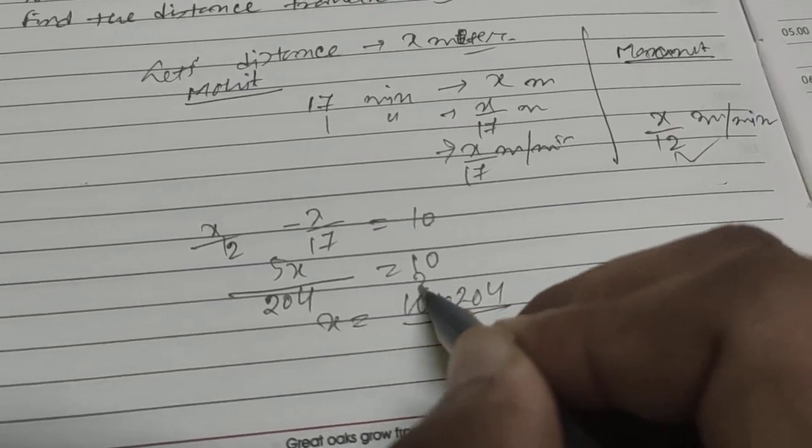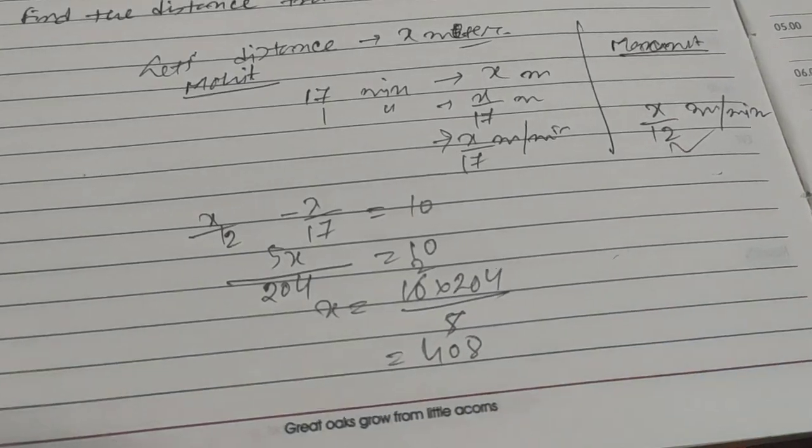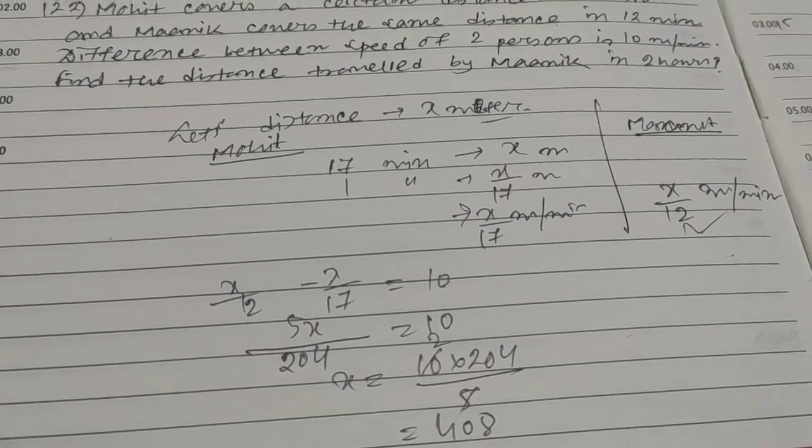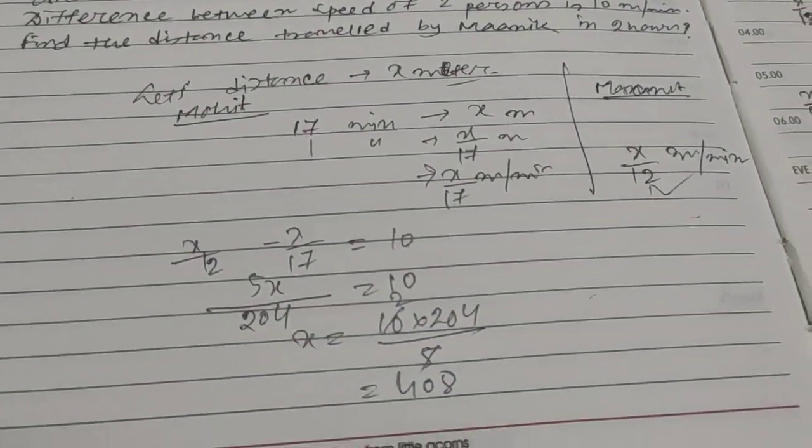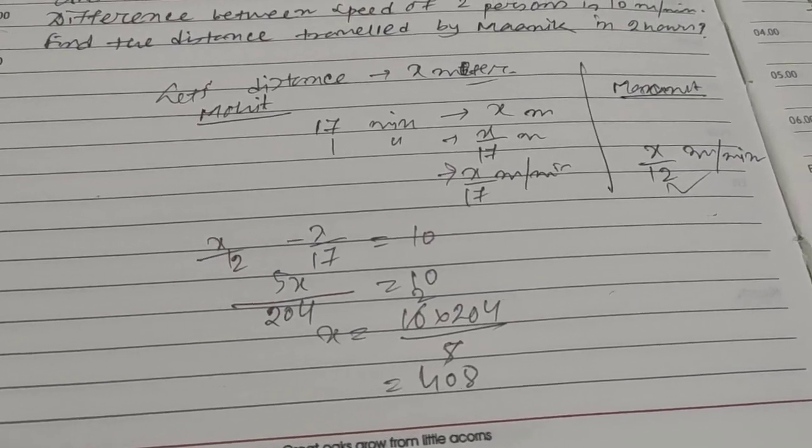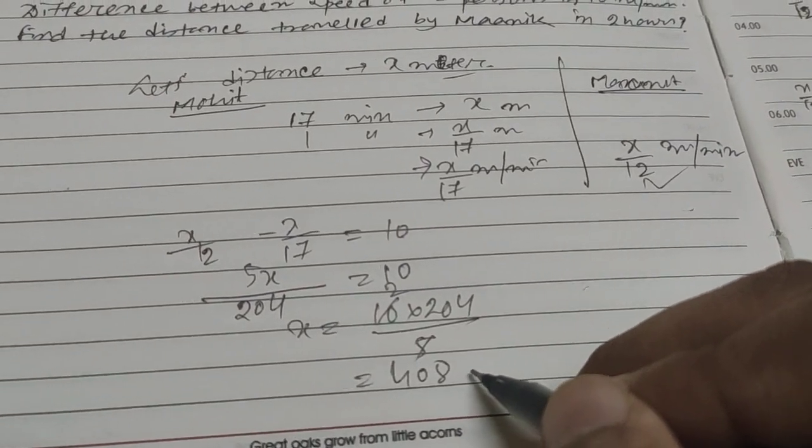Now you need to calculate the distance traveled by Manik in two hours. This is x meters. The speed of Manik is x by 12, means 408 by 12, which is 34 meters per minute.